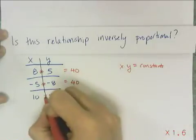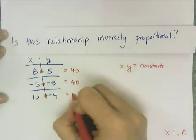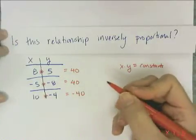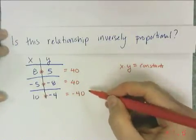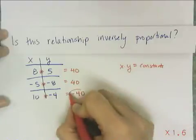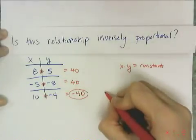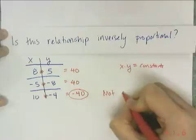Then 10 times negative 4 is negative 40. And although they all have 40s, this is actually a negative 40 and messes the whole thing up. So therefore, this is not an inverse variation.